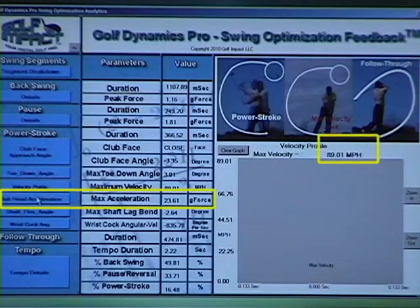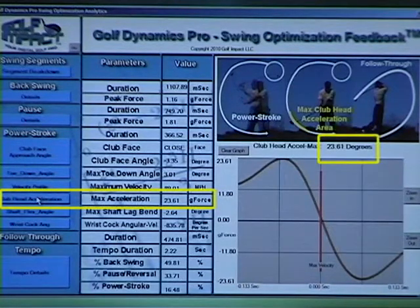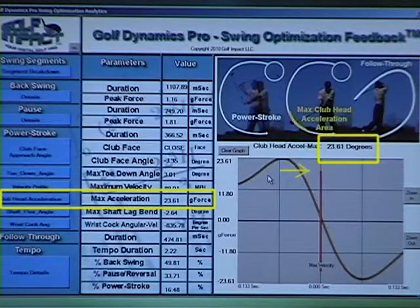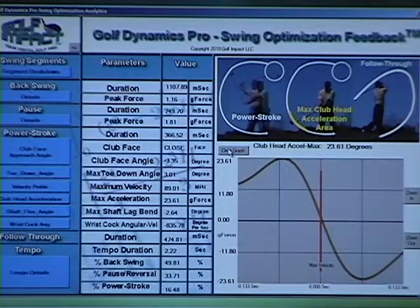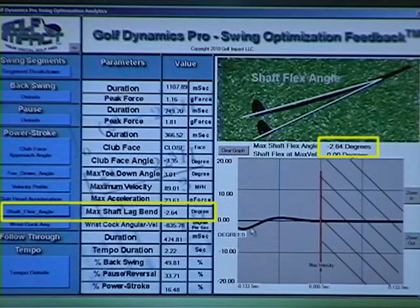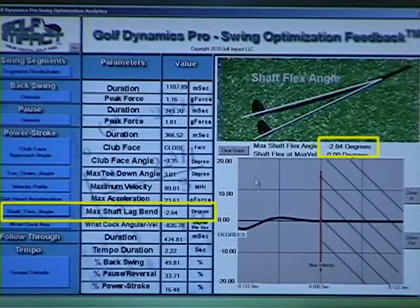The club head acceleration profile is another important metric that is affected by the point in the swing when release occurs. For example, a later release will result in a larger acceleration peak occurring later in the power stroke and closer to maximum velocity, and will typically lead to higher club head speeds. The shaft flex angle can be seen as lagging and then leading as the centrifugal forces act on the club head, which is also related to release and wrist action.